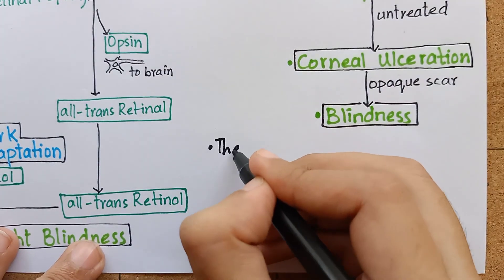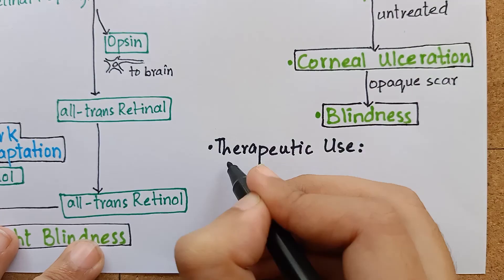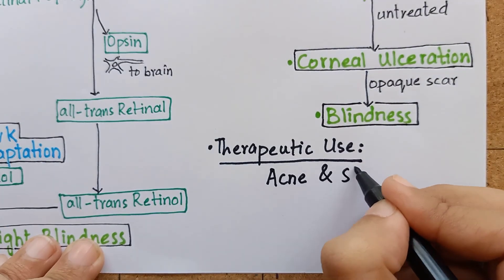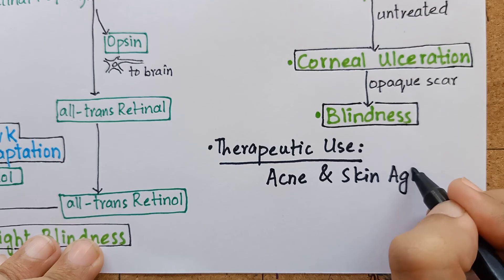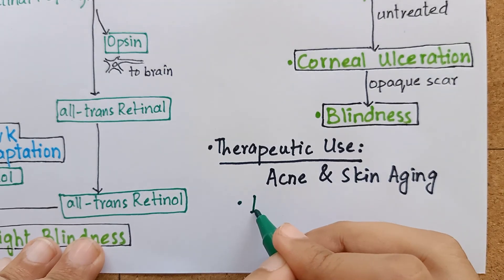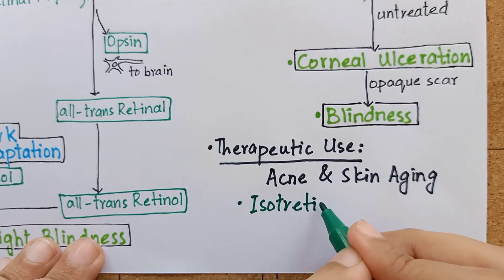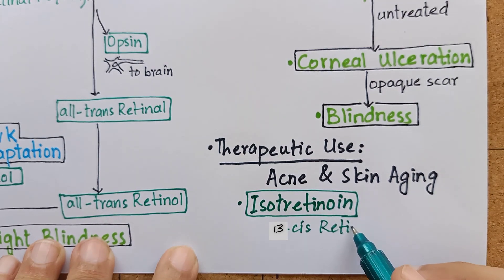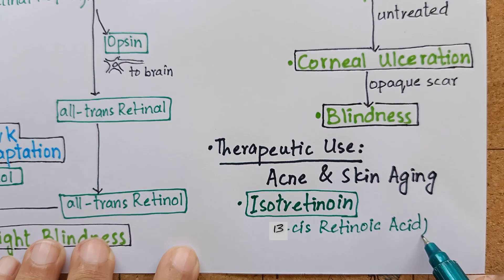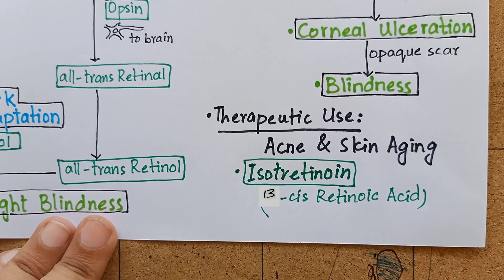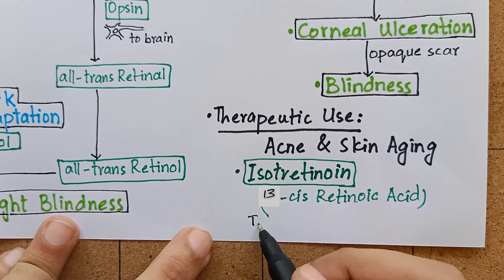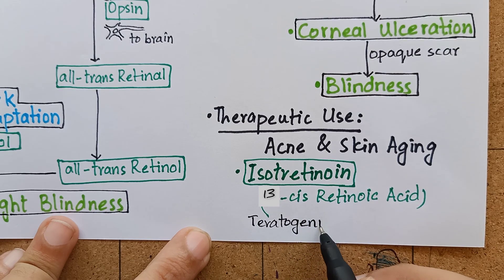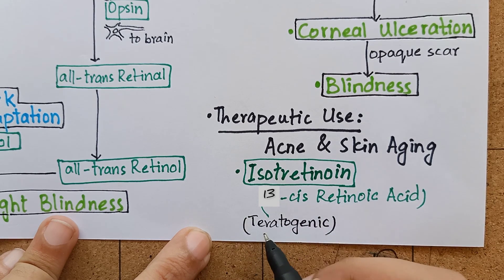As a therapeutic agent, vitamin A is used to treat dermatological problems such as acne and skin aging. These are treated with topical application of isotretinoins, which are 13-cis retinoic acids. The drug isotretinoin is actually teratogenic, so pregnancy must be excluded before initiation of treatment in women of childbearing age.